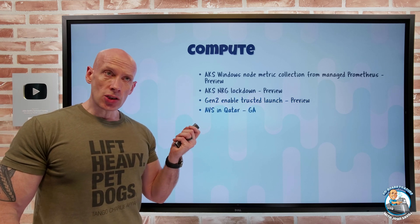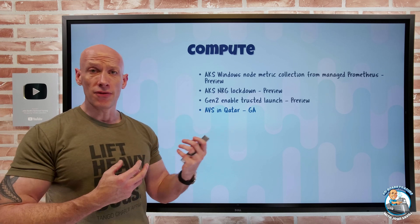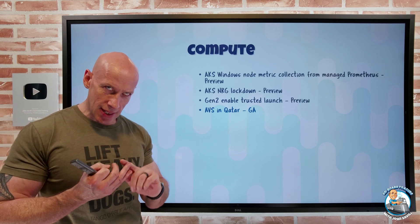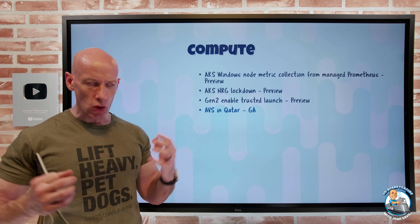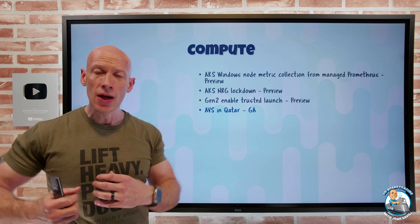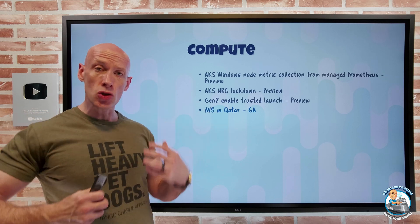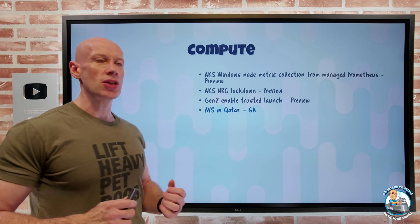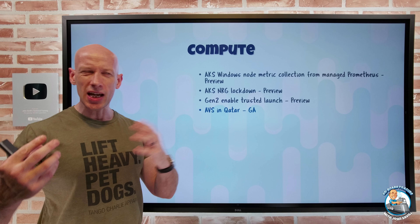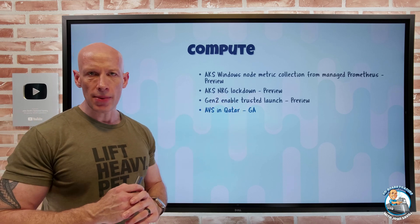The Azure VMware Solution — where you create your own virtual clusters of VMware-based solutions — is now available in Central Qatar. That uses the AV36P SKU, which is 36 cores, 768 gigabytes of RAM, and 19.2 terabytes of SSD per node. You combine multiple nodes to get your virtual SAN for storage. This is useful if you want to leverage existing VMware skills, lift and shift to Azure without rethinking Azure primitives.